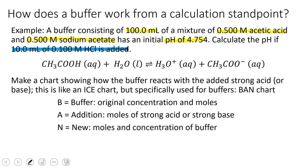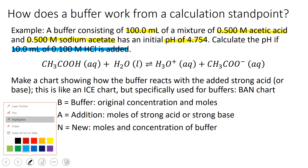When you have the buffer, we're going to find that it stops the change in pH from being very large when you add that strong acid. What we're going to compare is the buffer's pH change when you add HCl to what happens if you just add that HCl to water. The first calculation is going to be with the buffer, and then we'll see what would have happened if we just added that HCl to water, and we'll compare those things to see how the buffer prevents a large change in pH.